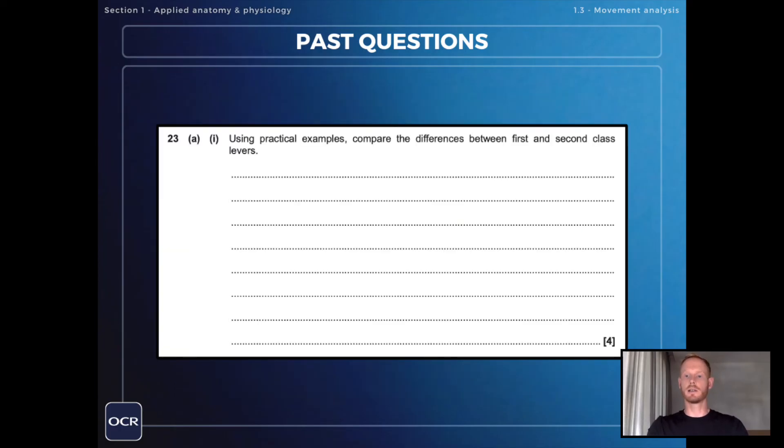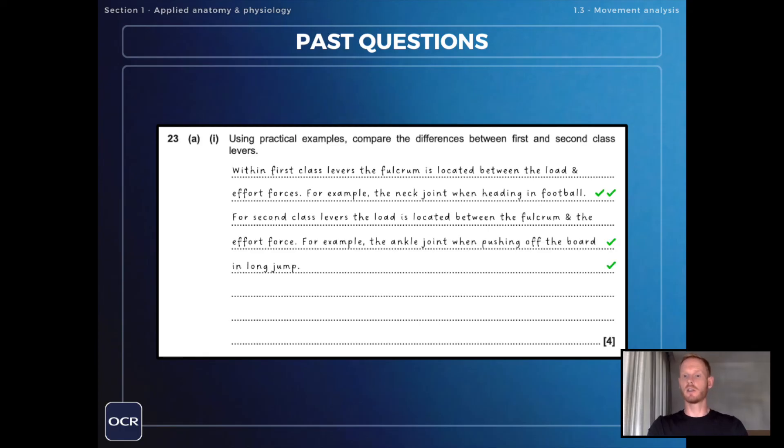Next using practical examples compare the differences between first and second-class levers. Within first-class levers the fulcrum is located between the load and effort forces in other words in the middle of the lever arm. For example the neck joint when heading in football.